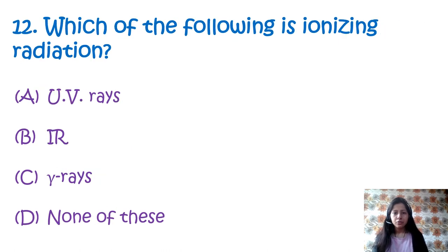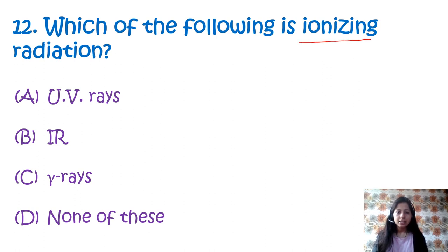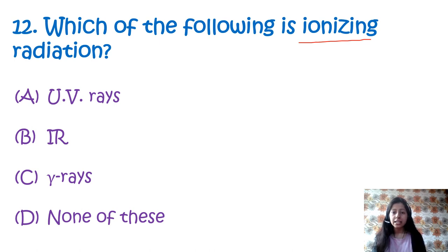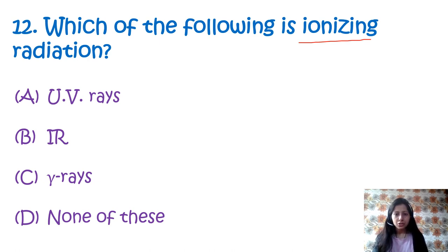Question 12: Which of the following is ionizing radiation? Option A: UV rays, option B: IR, option C: gamma rays, option D: none of these. Ionizing radiation is a type of radiation that has enough energy to ionize atoms or molecules by detaching electrons from them. Ionizing radiation includes gamma radiation, nuclear radiation, X-rays, and cosmic rays. So the correct option is option C, gamma radiation.